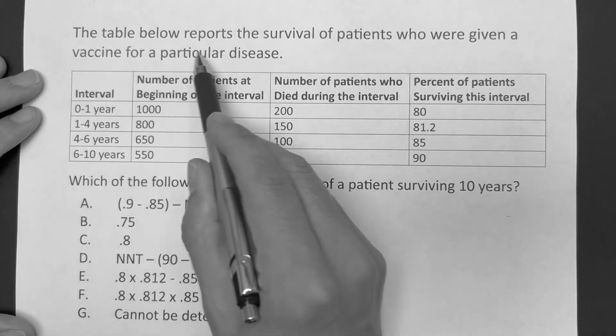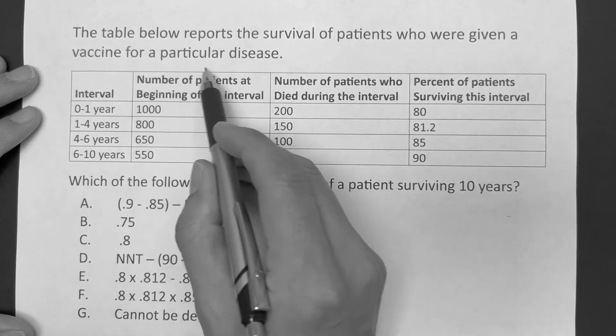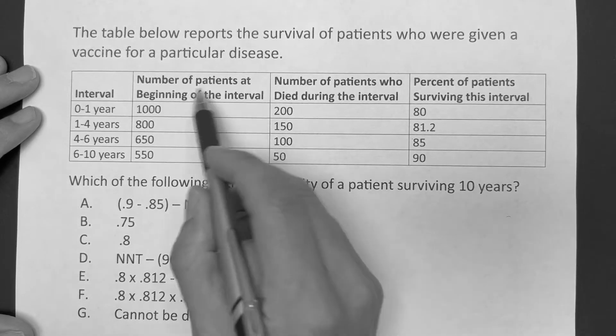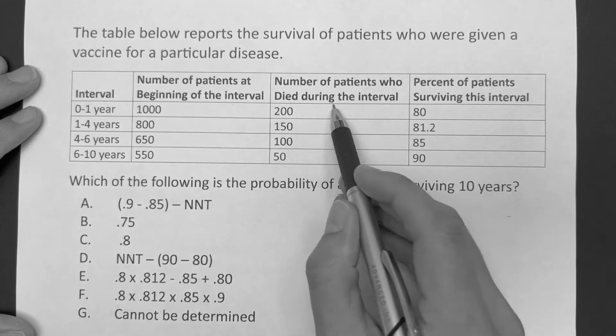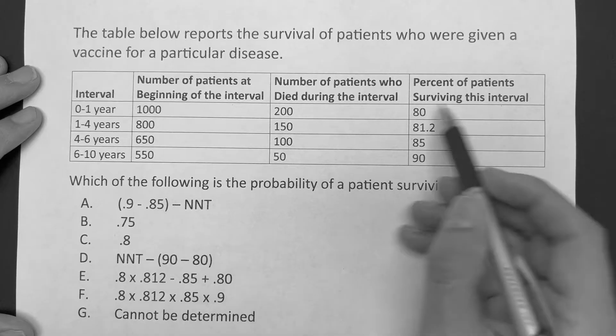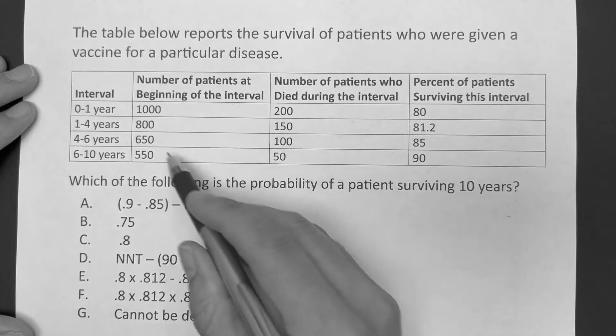This question reads: the table below reports the survival of patients who were given a vaccine for a particular disease. You have this table with number of patients beginning at the interval, number of patients who died during the interval, and the percent of patients who survived this interval. It gives 0 to 1, 1 to 4, 4 to 6, and 6 to 10 years, so a lot of information here.